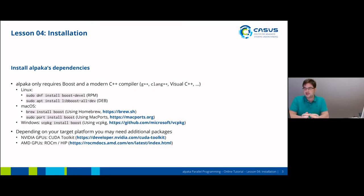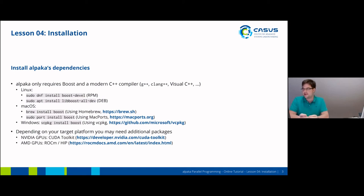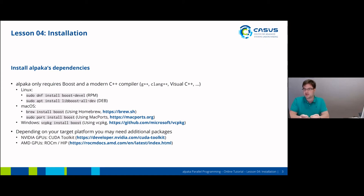However, Boost needs to be installed. If you're on Linux, just use your package manager for installing the necessary Boost packages. On macOS, you can use either Homebrew or MacPorts, depending on what you prefer. And on Windows, we recommend using the vcpkg tool. vcpkg is a C++ package manager from Microsoft — it's open source and available on GitHub. Once you have it installed, you can just type the vcpkg install command in PowerShell and it should install Boost in a usable version.